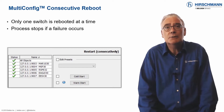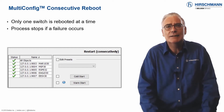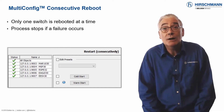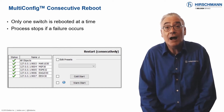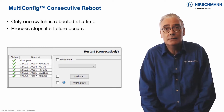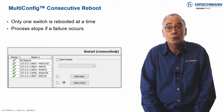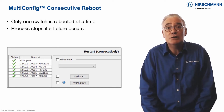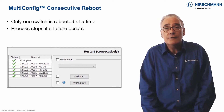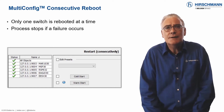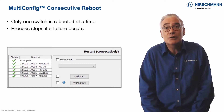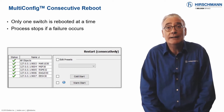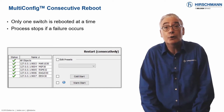Rebooting all switches simultaneously causes massive disruption to live operation. Even worse, it entails a high degree of risk. What happens if some devices do not reboot? The multi-config consecutive reboot function will reboot the switches one after the other. If a switch does not reboot, the process stops. Use this function to reduce disruption and minimize risk when conducting emergency maintenance on your network.